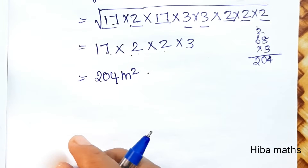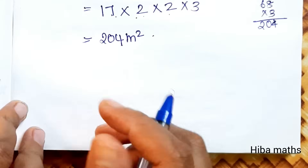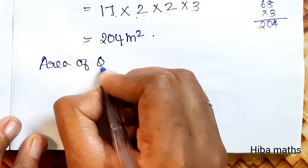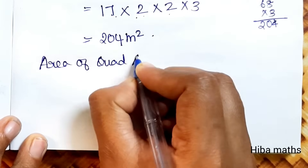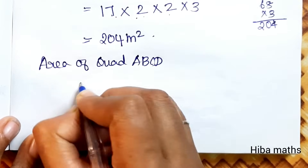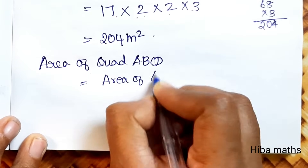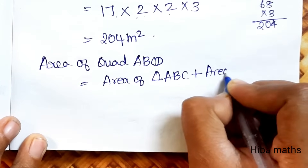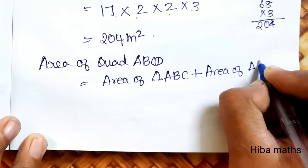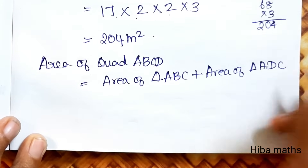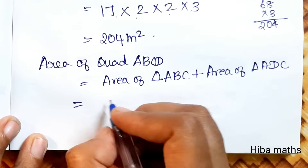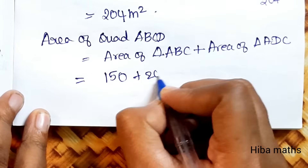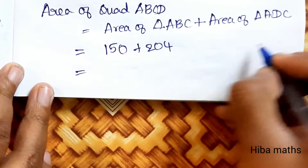So, area of quadrilateral ABCD = area of triangle ABC + area of triangle ADC = 150 + 204 = 354 square meter. Thank you.